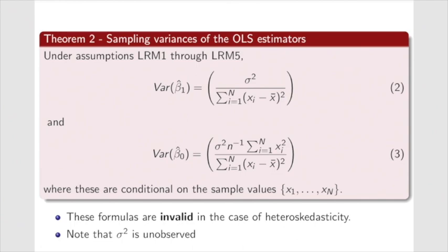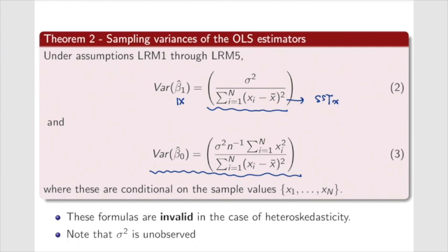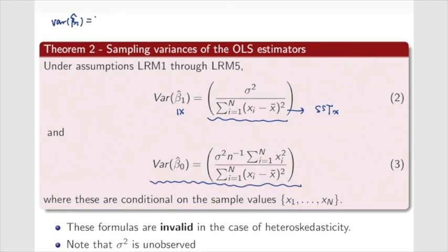Under assumptions 1 to 5, we have the sampling variances of the OLS estimators. The variance of β̂₁, conditional on x, is equal to σ² divided by SSTₓ — the total sum of squares of x. The variance of β̂₀ is given by a separate formula. Notice that these two formulas hold under assumption 5, the homoskedasticity case. If the error terms show heteroskedasticity, these two variances are not valid.